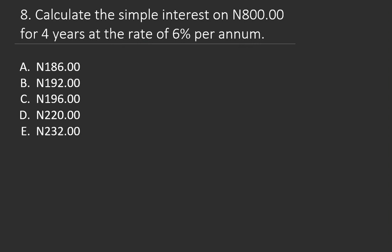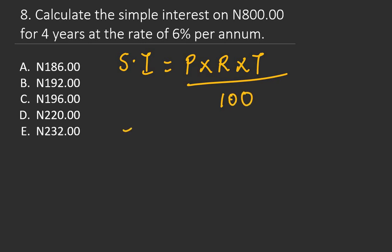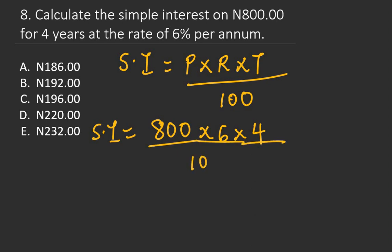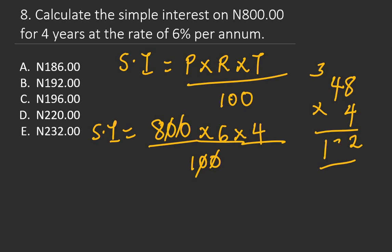Question 8: Calculate the simple interest on 800 Naira for 4 years at the rate of 6% per annum. The formula is SI = (Principal × Rate × Time) / 100. SI = (800 × 6 × 4) / 100. The two zeros cancel: 8 × 6 is 48, and 48 × 4 is 192. The right answer is B: 192 Naira.